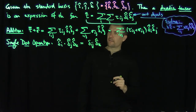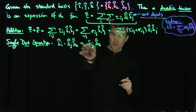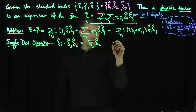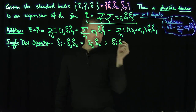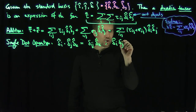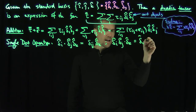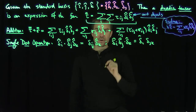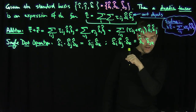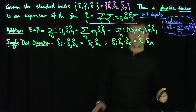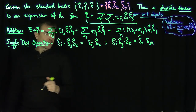Similarly, if I did (delta-i-hat delta-j-hat) dot delta-k-hat, that would be delta-i-hat times delta_jk. So you can see these things are going to be different based on order — there's going to be some sort of transposition that occurs. Those are the single dot operations.